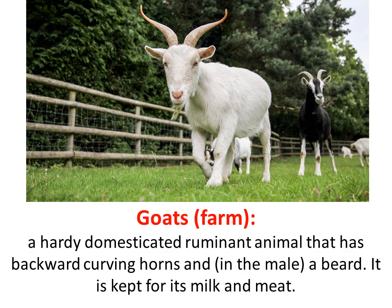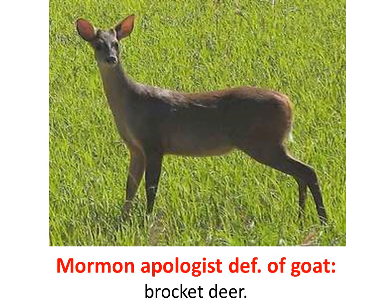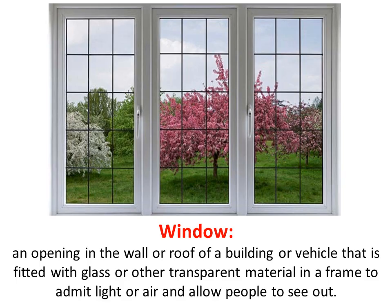A goat — these were supposed to have existed in Book of Mormon times. It is a hardy domesticated ruminant animal with backward-curving horns and in the male a beard, kept for its milk and meat. This is actually a pretty funny one — since there were no goats, the Mormon apologists said maybe it was a brocket deer. See the picture above — a brocket deer. That does not look like a goat.